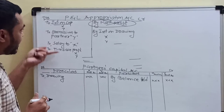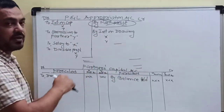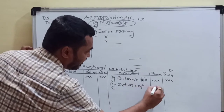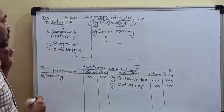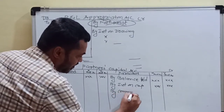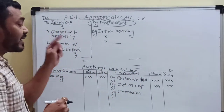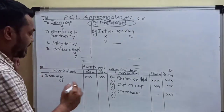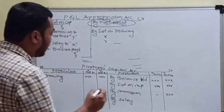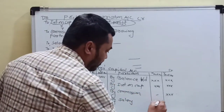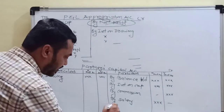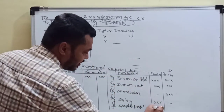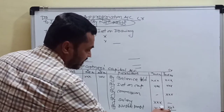Whatever is on the debit side of the profit and loss appropriation account will be transferred to the credit side of the partner's capital account. So here we write: by interest on capital — X's amount and Y's amount. For commission, we write the amount only in the column of the relevant partner. Similarly for salary, we write only 'salary' and enter the amount in X's column. For divisible profit, we write X's and Y's amounts according to the profit sharing ratio.